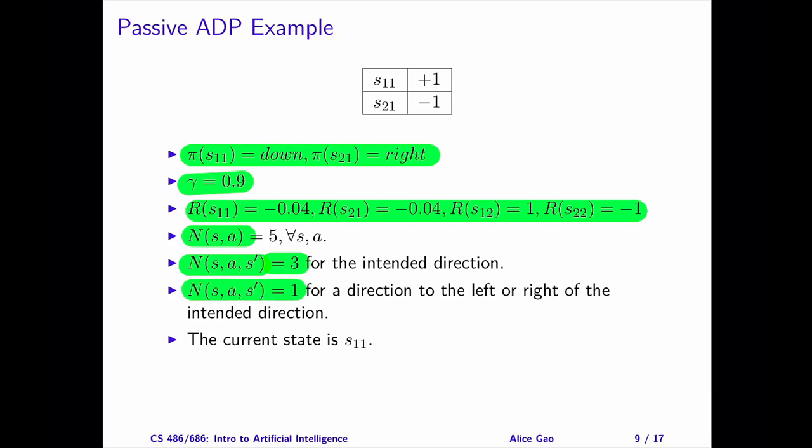Our current transition probability estimates are: the probability of traveling in the intended direction is 0.6, and the probability of traveling to the left or to the right of the intended direction is 0.2. The current state is S11.